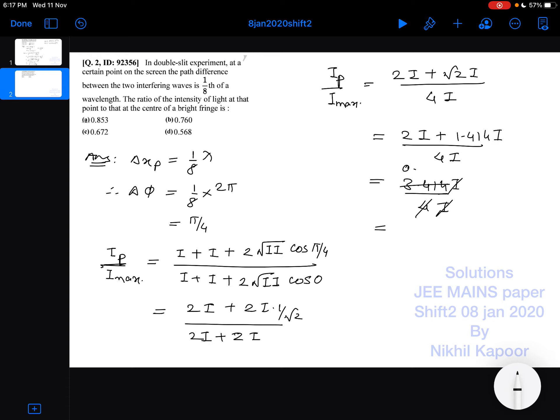Now calculating: 3.414 divided by 4 gives approximately 0.853 which is option A.